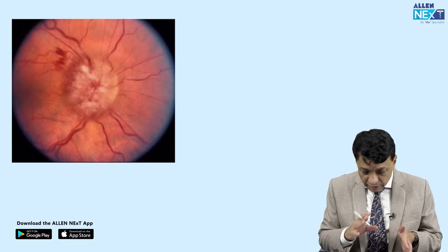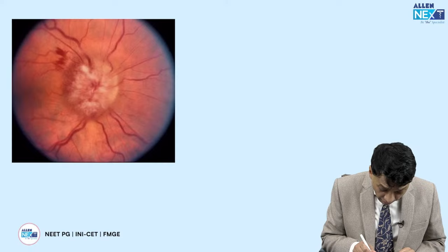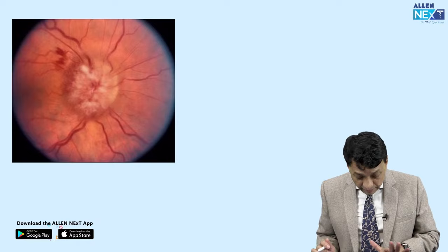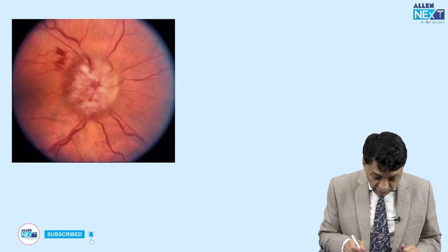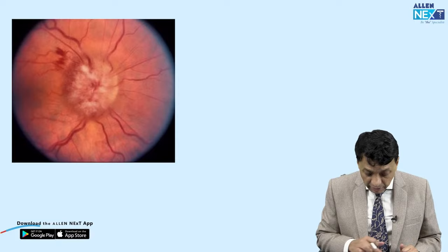In comparison: this disc edema again shows blurred disc margins, but the blood vessels here are engorged and the disc color is hyperemic — this is papilledema. The previous one was pale disc edema of giant cell arteritis; this is papilledema. Most disc edemas are hyperemic — not pale. Pale disc edema specifically points to giant cell arteritis.